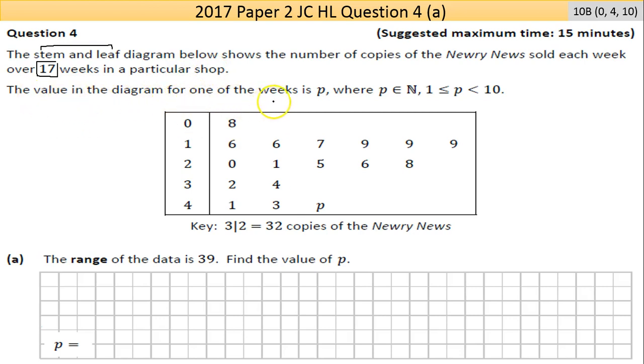It's important to know what a stem and leaf diagram is and how it works. It's very commonly asked these days. So the value in the diagram for one of the weeks is p, where p is an element of N, that means it's a natural number. It's going to be a positive whole number, and p is between 1 and 10. So p is greater than 1, less than 10, so actually it's between 1 and 9 really. And the stem and leaf plot, you see that that scores as 8 people that week. 1 and 6 makes 16, 1 and 7 makes 17. It's just a way of representing data that's slightly different. The key there shows you it, and it's important to be able to recognize that. If you're asked to draw a stem and leaf plot, you have to be able to make that key, otherwise it won't get full marks.